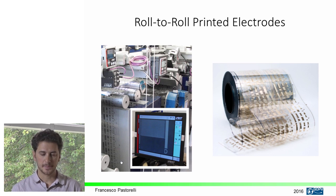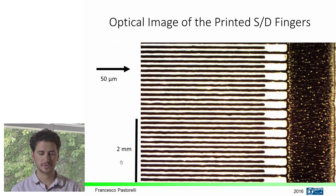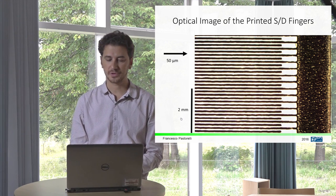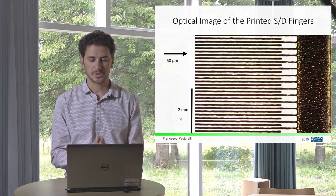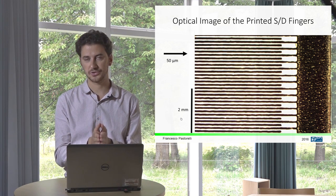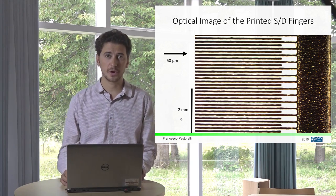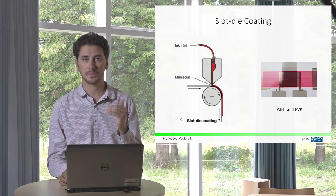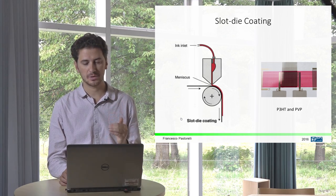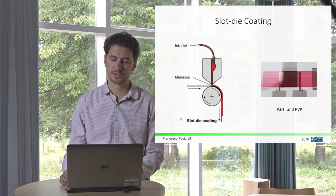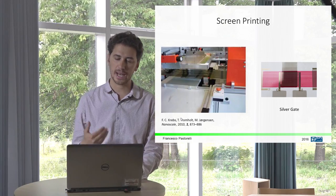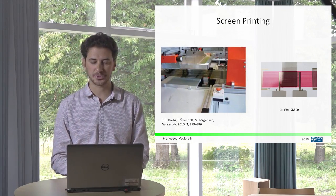The result is a long roll of plastic with silver electrodes on top, with a print resolution of up to 50 microns and a very well defined pattern. This is the optical image of the printed source and drain fingers of our electrodes. From this point, we realize the transistor by adding a first layer of P3HT using a slot-die coating machine, then a second layer of PVP as a dielectric to isolate the semiconductor material from the top gate electrode. The last step was to screen-print the top gate electrode on top of the device.